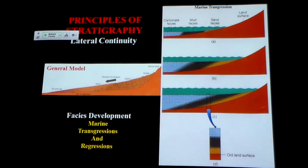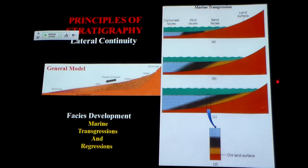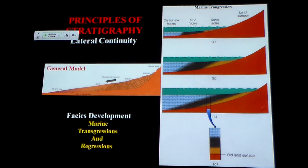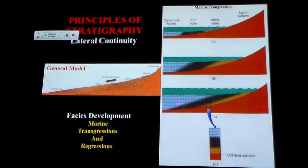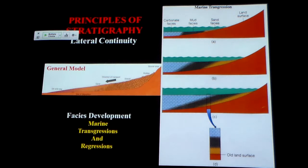We talked about this idea that the basin fiddles from side to side — this idea of lateral continuity. We used the example of the sandy beach moving to the offshore, quieter water shale deposition, to the further offshore, clean water, quiet carbonate precipitation. And how we could tell if it was a rising sea level or a falling sea level, as everything would transgress onto the land during a rising sea level and regress or retreat from the land moving basinward during a sea level drop.